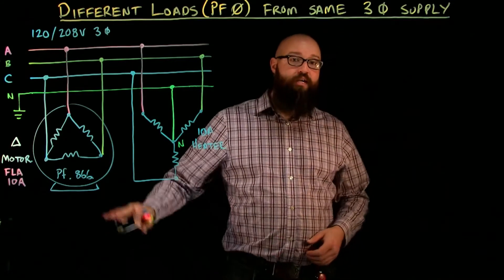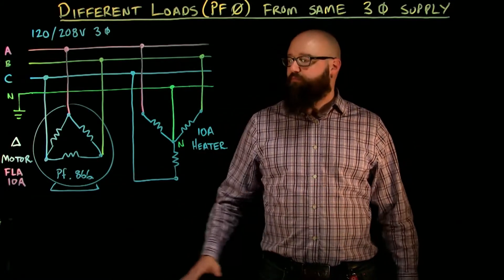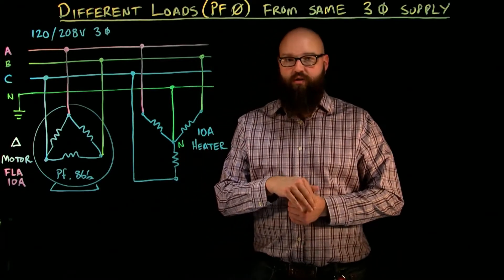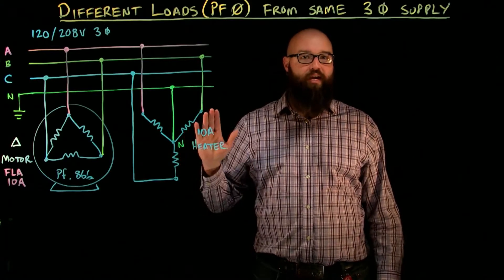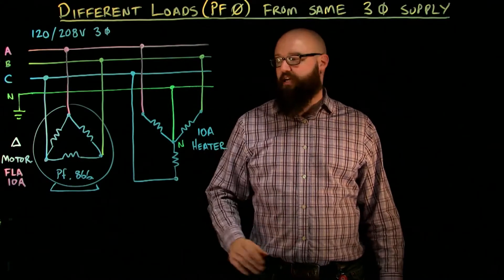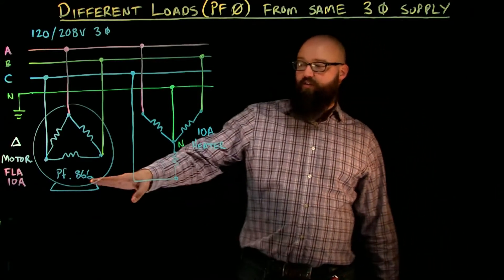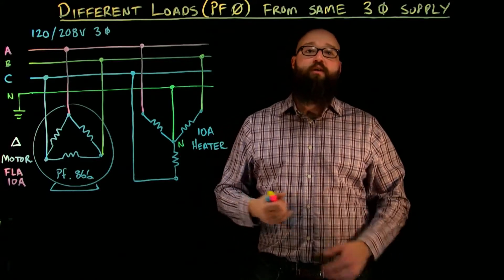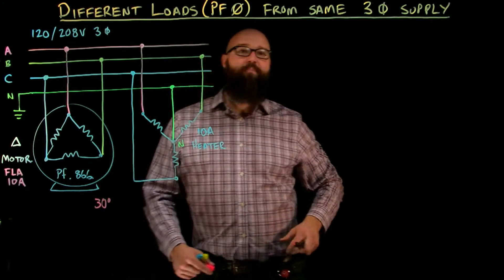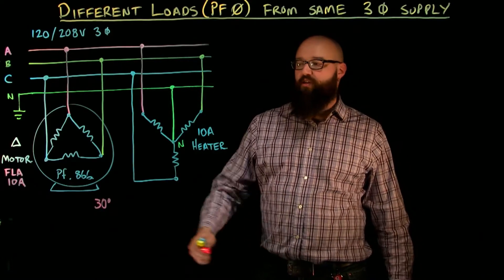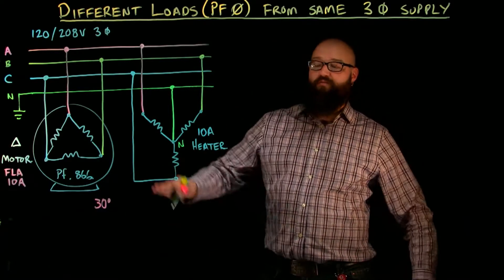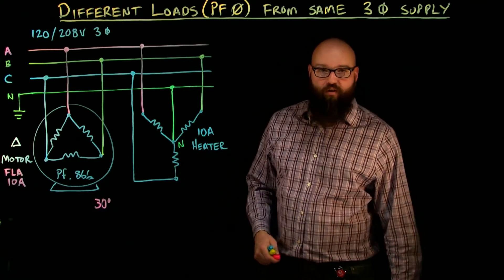We'll start with our Delta connected load here because that's the one that's going to take the most work. It tells me that I have an FLA or full load current of 10 amps. Another way to look at that is the full line current because one of the questions that gets asked a lot is what is FLA? Line current or phase current? If I clamp an ammeter around one of these lines I would read the FLA of 10 amps. So that tells us that FLA is line current. We also have a power factor of 0.866 which if we arc cos that power factor gives us an angle of 30 degrees. What that power factor angle tells us is how much the phase current in this Delta motor lags the phase voltage in this Delta motor.